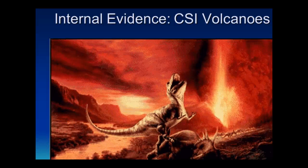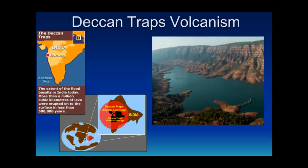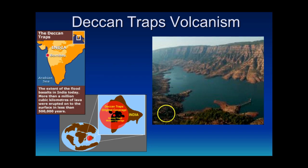Now let's look at more evidence — this time from inside the earth, what we call internal evidence. Let's talk about something called the Deccan Traps. Write in your notes that 65 million years ago, a series of huge volcanic eruptions occurred in what is India today. These eruptions happened near the end of the age of the dinosaurs, between 67 and 63 million years ago, creating the mammoth Deccan Traps — lava beds in India that originally may have covered as much as 580,000 square miles, roughly 1.5 million square kilometers, more than twice the area of Texas.